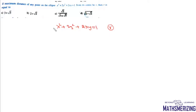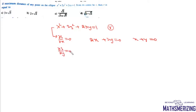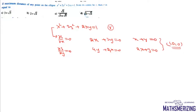First, we'll find the center of this conic. We differentiate the equation partially with respect to x and set it equal to 0, giving 2x + 2y = 0, so x + y = 0. Then partially differentiating with respect to y gives 4y + 2x = 0. Solving both equations, we get x = 0 and y = 0. So the center of this conic is at (0, 0) — this equation represents a central conic whose center is at the origin.